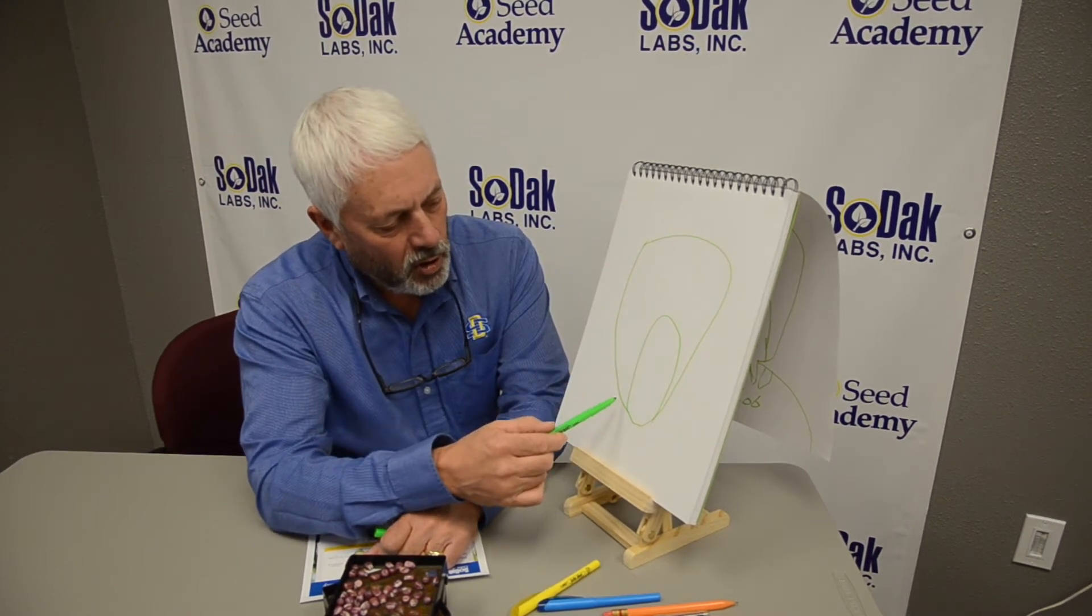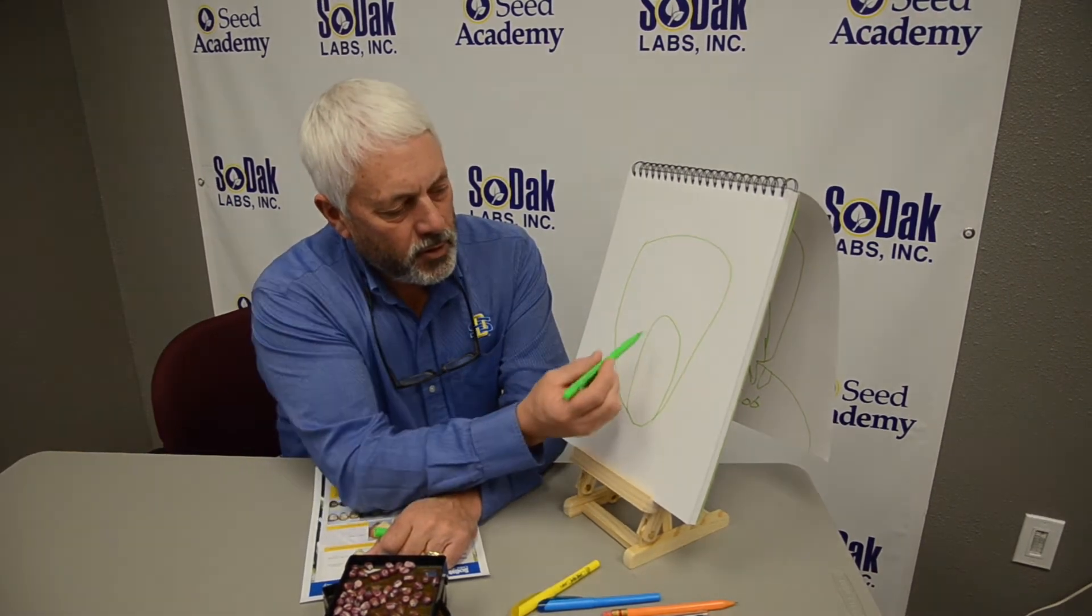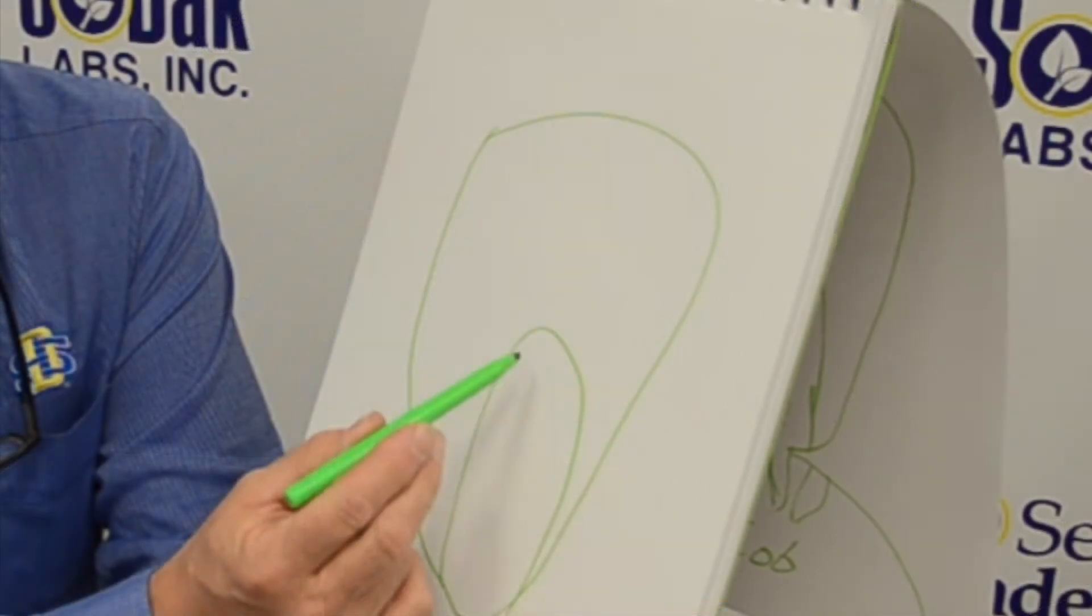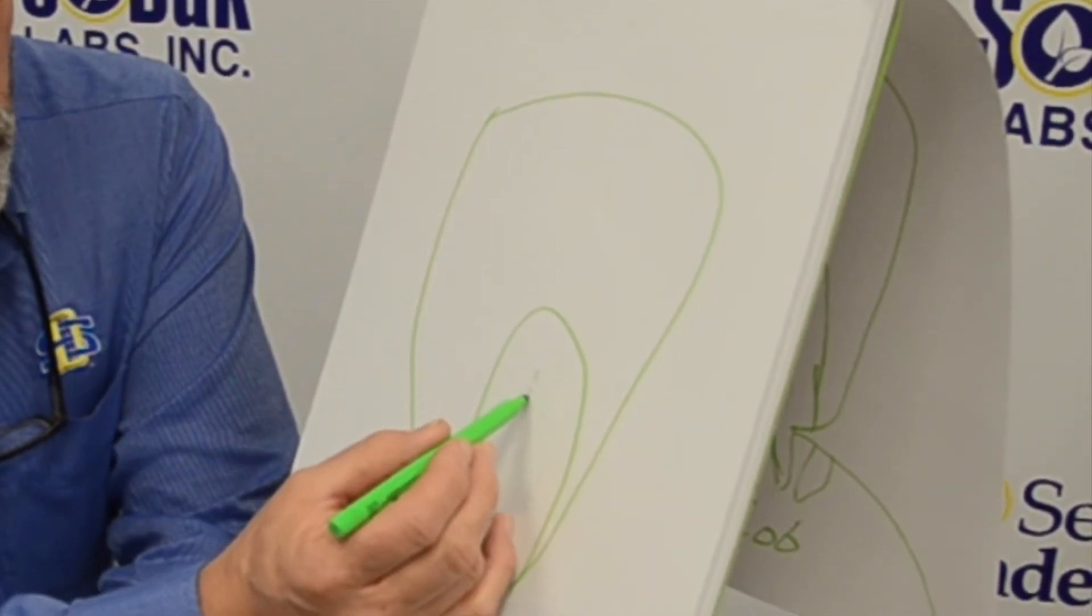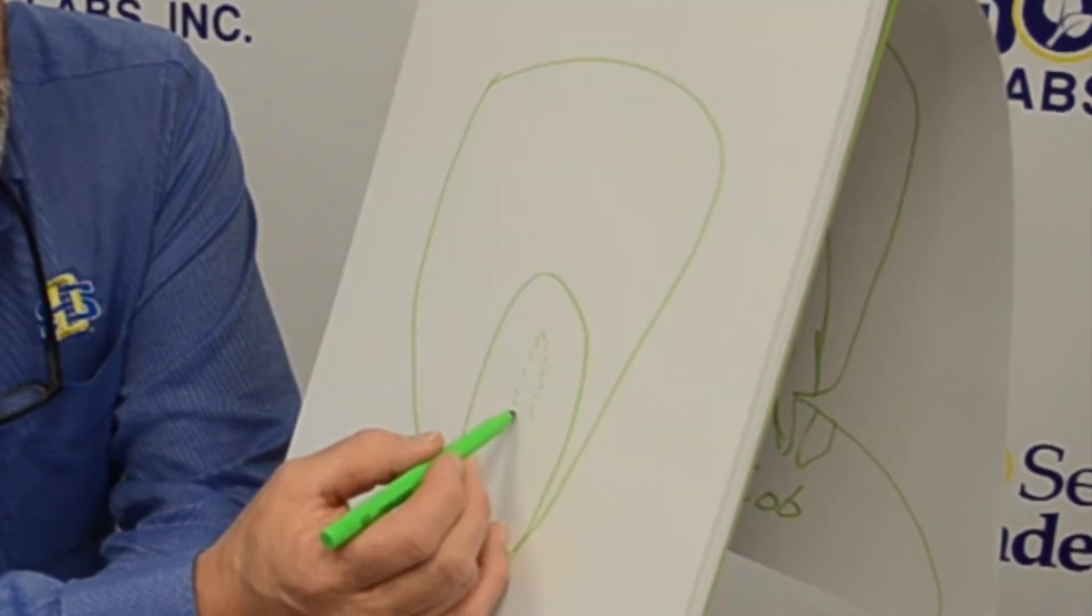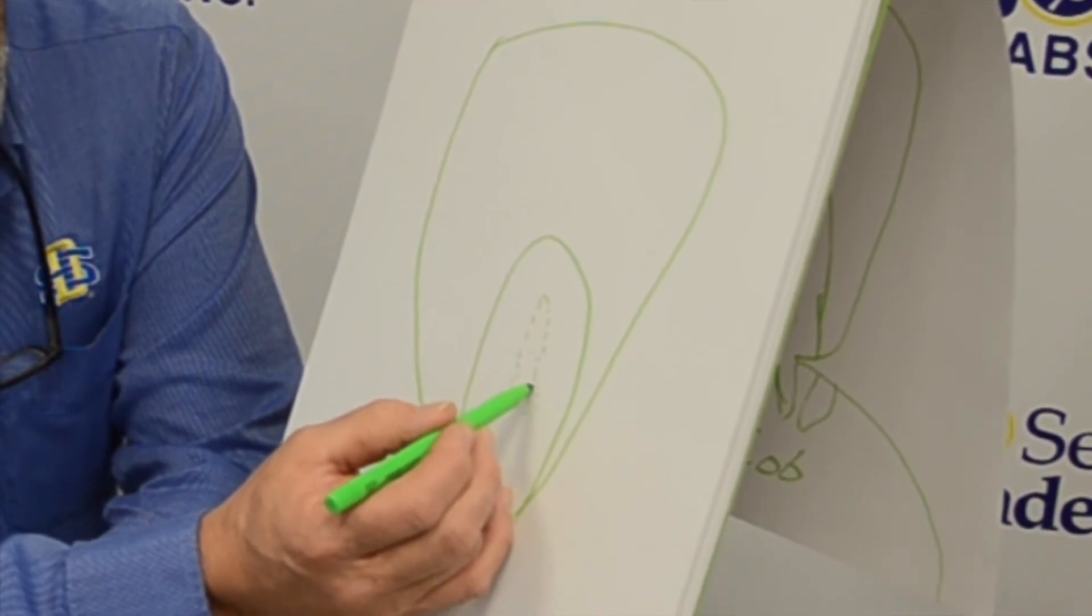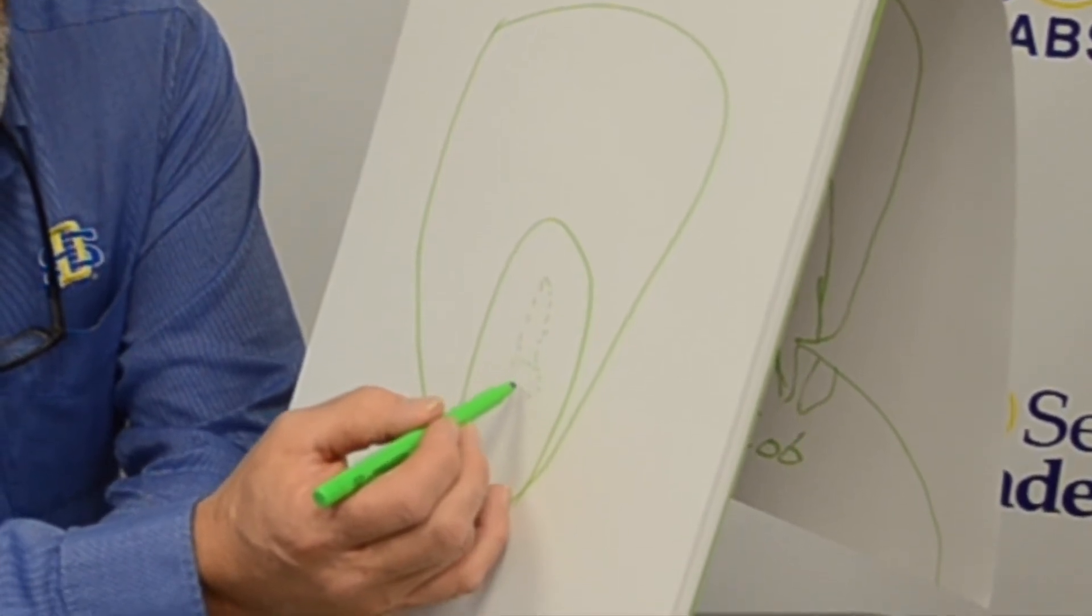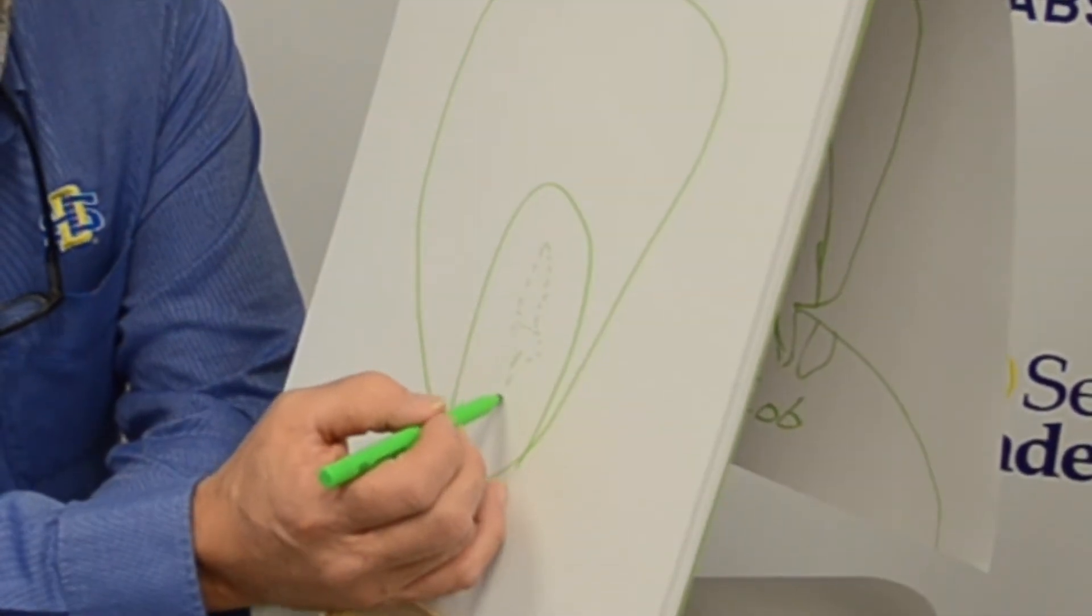There's structures under the pericarp here. We have the scutellum and then we have our shoot right here. We have some mesocotyl area there. You get your seminal roots from this area right here. The brace roots all grow out of mesocotyl.